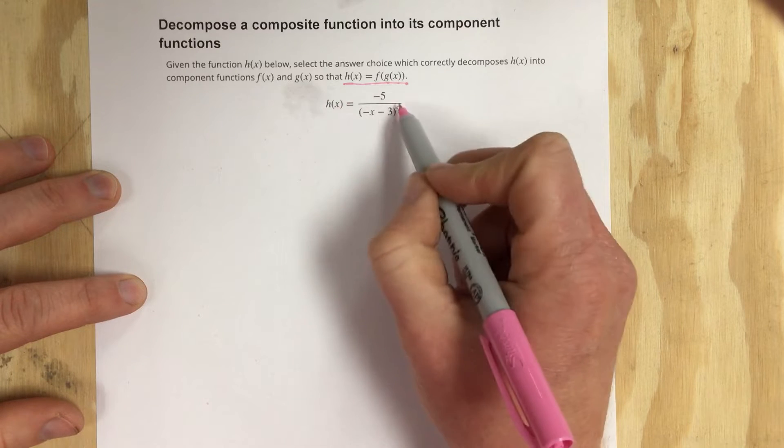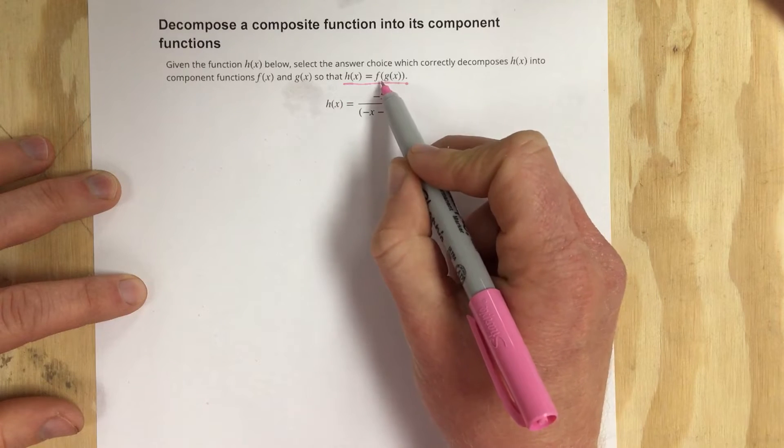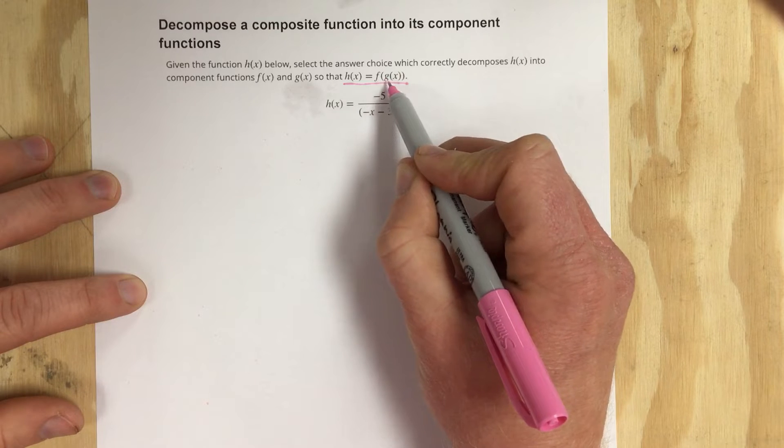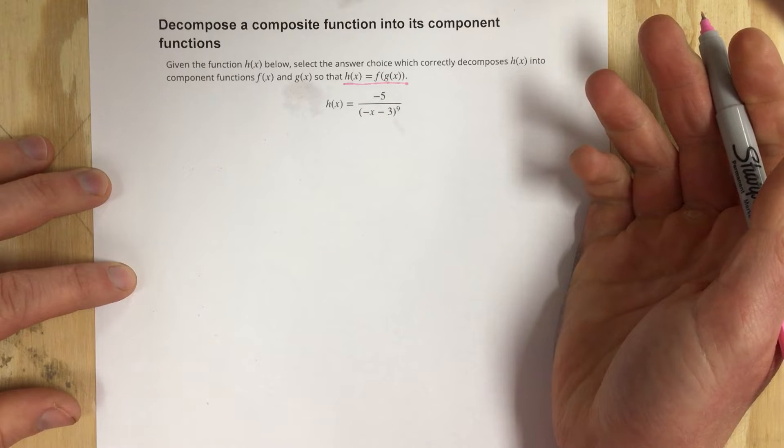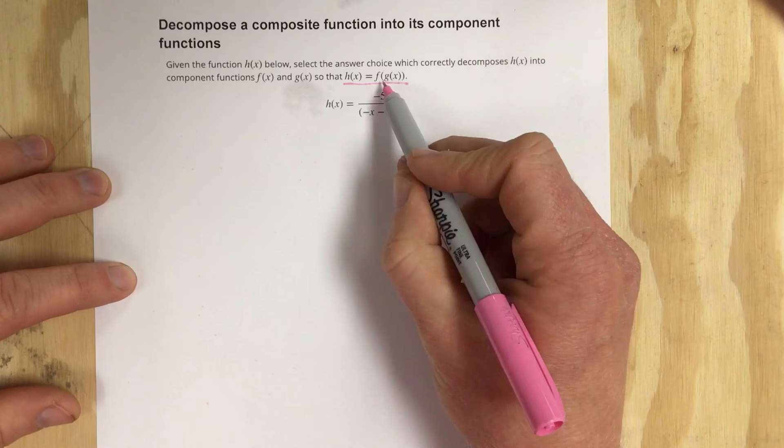So they're saying that this function was composed using two different functions and they want you to state what those two functions were. Well there's going to be a few options here.